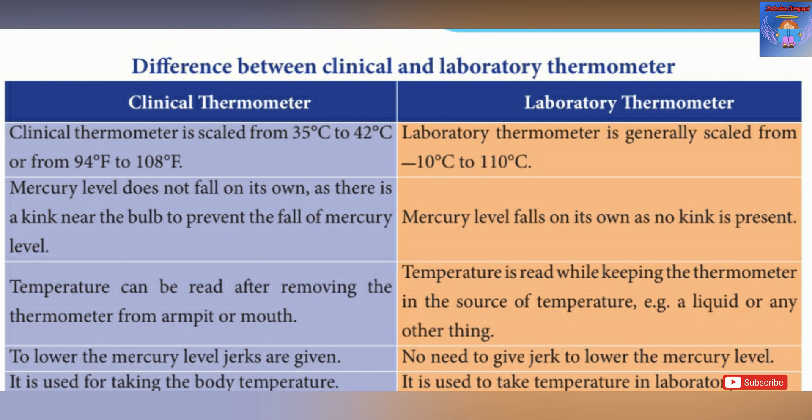Now the difference between clinical and laboratory thermometers. The clinical thermometer ranges from 35 degrees Celsius to 42 degrees Celsius (94 to 108 degrees Fahrenheit). The laboratory thermometer ranges from minus 10 to 110 degrees Celsius. In a clinical thermometer there is a kink that prevents mercury from falling back; in a laboratory thermometer there is no such kink. The clinical thermometer requires jerking; the laboratory thermometer does not.